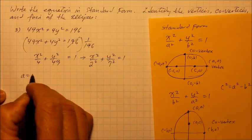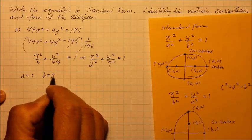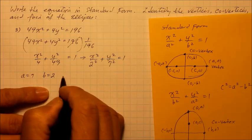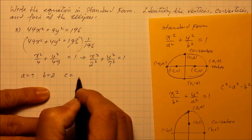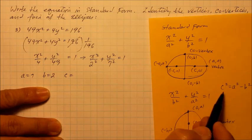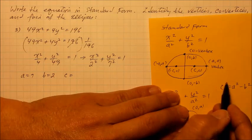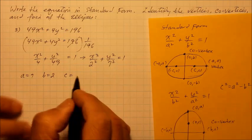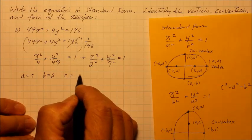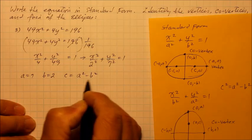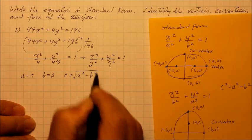So a is 7, b is 2. Now c, how do you find the c? Well, remember the formula is c squared equals a squared minus b squared. So if I square root everything to solve for c, c is equal to the square root of a squared minus b squared, the entire difference squared.